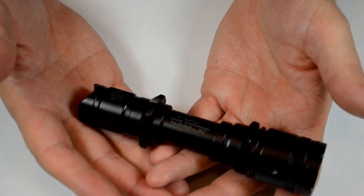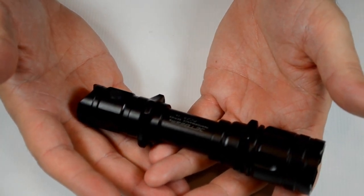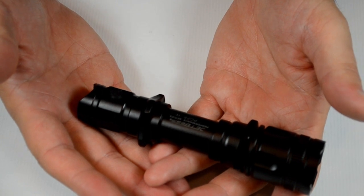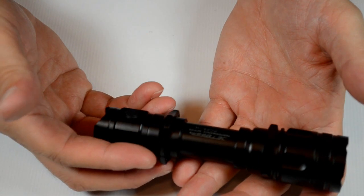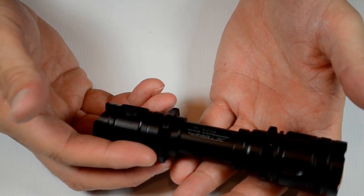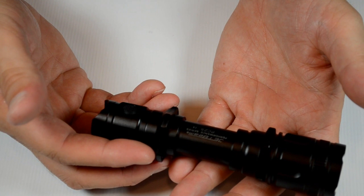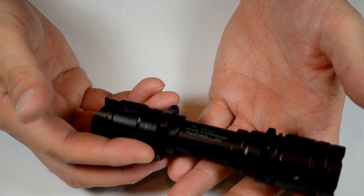So that's the new PC-25 from JetBeam that can be found at lightjunction.com along with many other well-known brands of lights. So just click that button and you'll find them.